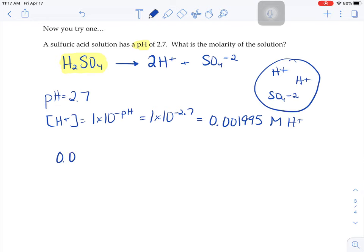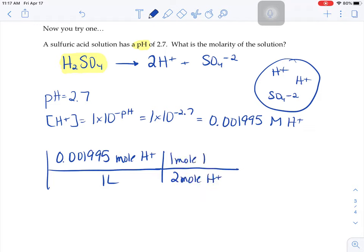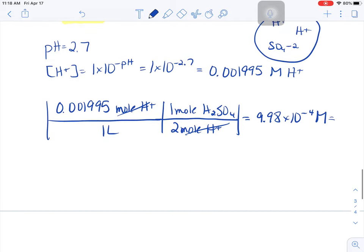And then to get that into a molarity of your whole solution, not just molarity of your ion, I'm going to use the idea that there's two moles of H plus per mole of sulfuric acid. And once again, the molarity of your whole solution is going to be half that of the ion. So you'll get something like 9.98 times 10 to the negative fourth molar. Or your calculator might be displaying that as just a traditional number.